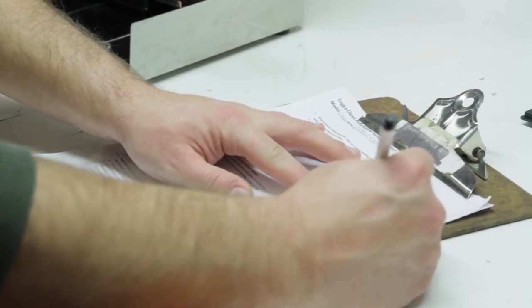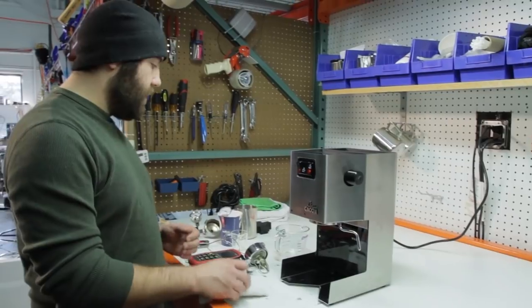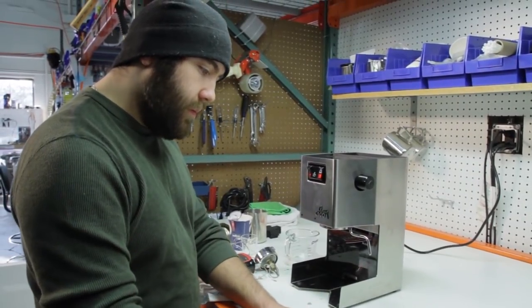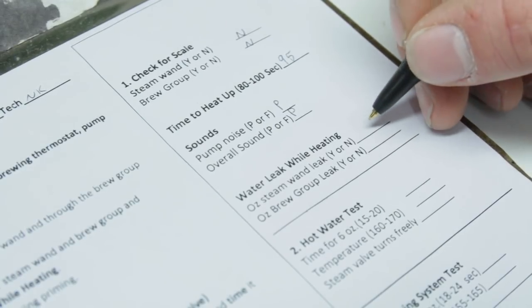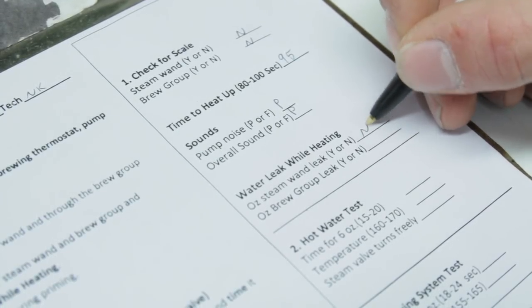At the same time, we're watching the brew group and the steam wand as it's heating up to see if there's any dripping or leaks. As the machine heats, it'll get more pressure. If there's a leak, you'll see it right then and there. If there's a problem, then we tear the machine down and we fix it at that point.